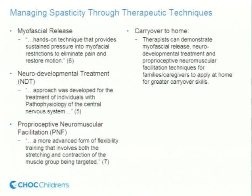Another technique is Proprioceptive Neuromuscular Facilitation, or PNF — different patterns that you can use to reach for objects and do exercises. Basically, you move the arm through the whole entire range and movement, strengthening and lengthening certain muscles, then doing the opposite. It strengthens both sides — your agonist and antagonist muscles.